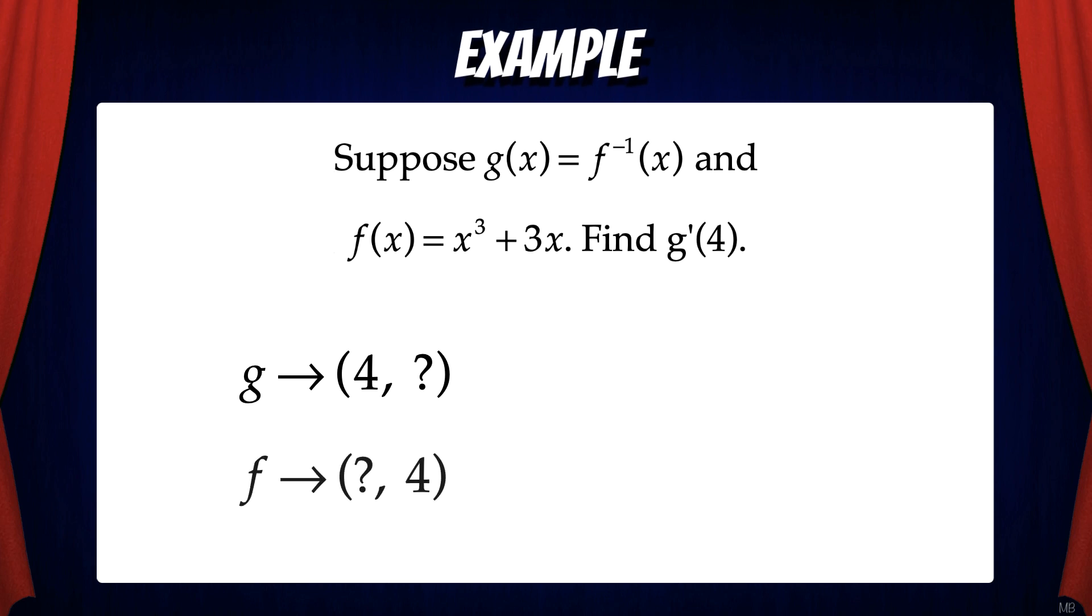That means the point something comma 4 is on the f graph. So to find the missing number here, we're going to set f of x equal to 4 and solve for x.